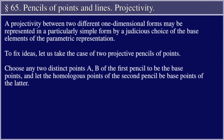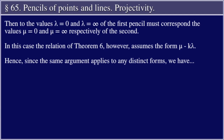A projectivity between two different one-dimensional forms may be represented in a particularly simple form by a judicious choice of the base elements of the parametric representation. To fix ideas, let us take the case of two projective pencils of points. Choose any two distinct points A, B of the first pencil to be the base points, and let the homologous points of the second pencil be the base points of the latter. Then, to the values λ = 0 and λ = ∞ of the first pencil must correspond the values μ = 0 and μ = ∞ respectively of the second. In this case, the relation of Theorem 6 assumes the form μ = kλ.